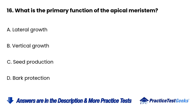Question 16: What is the primary function of the apical meristem? a. Lateral growth. b. Vertical growth. c. Seed production. d. Bark protection.